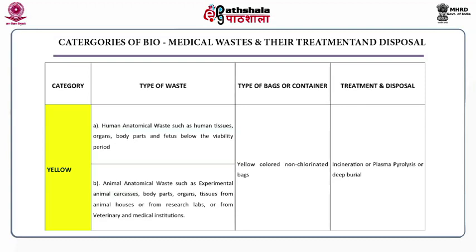Categories of biomedical waste and their treatment — Yellow category: Human anatomical waste such as human tissues, organs, body parts and fetus below the viability period. Also includes animal anatomical waste such as experimental animal carcasses, body parts, organs and tissue from animal houses, research labs, or veterinary and medical institutions. Container required: yellow colored non-chlorinated bags. Treatment/disposal: incineration, plasma pyrolysis, or deep burial.